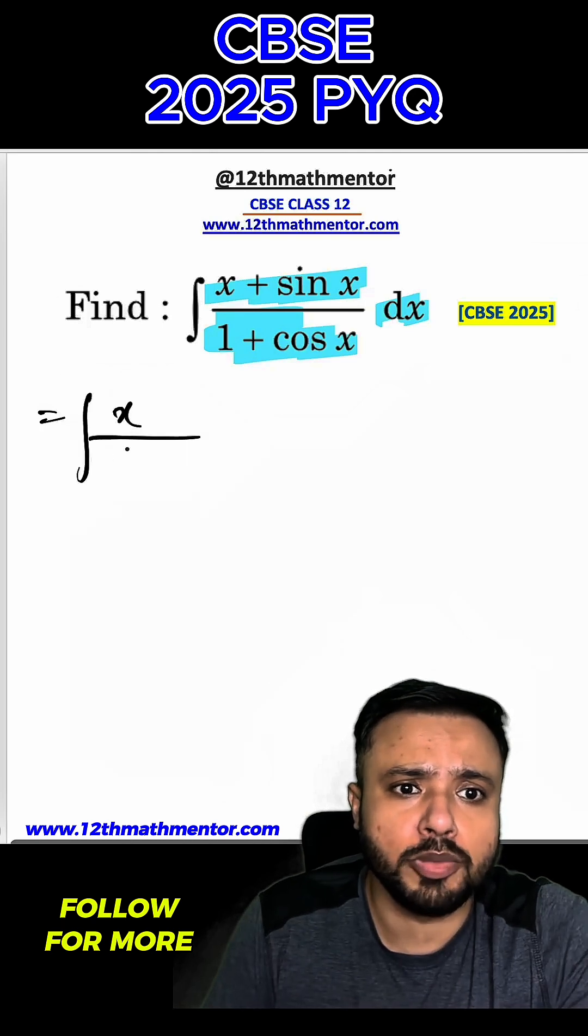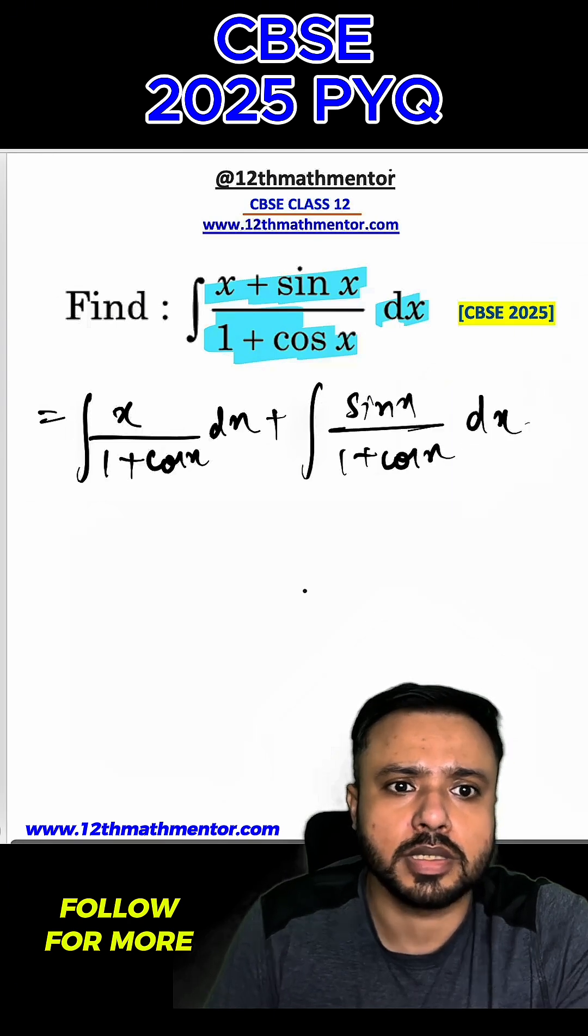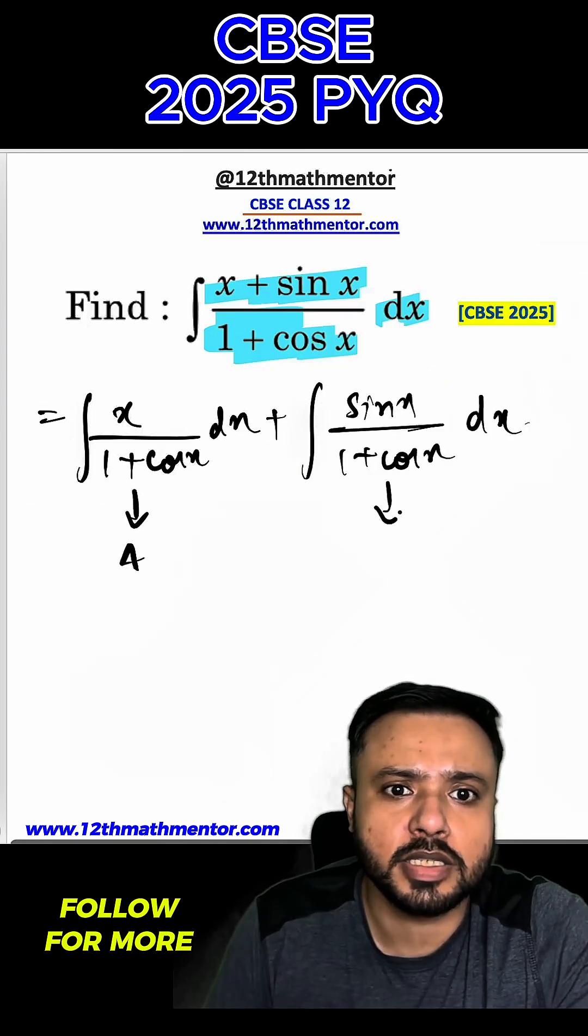So to solve this integral, I am going to first separate the numerator. I can write it as integral of x upon 1 plus cos x dx plus integral of sin x upon 1 plus cos x dx. Now let's consider this as A and this as B.